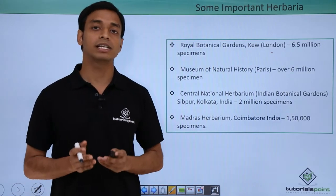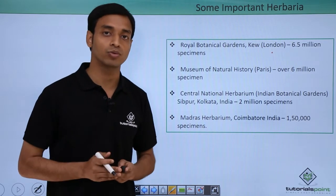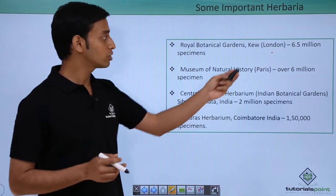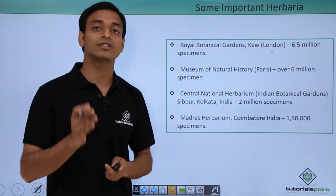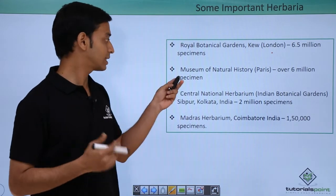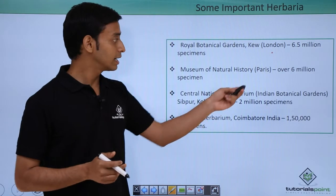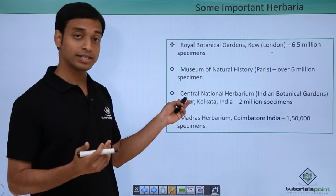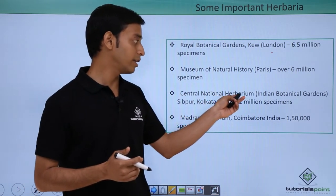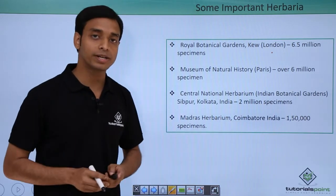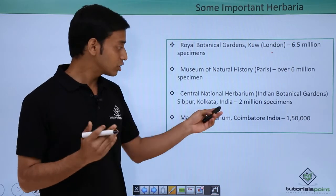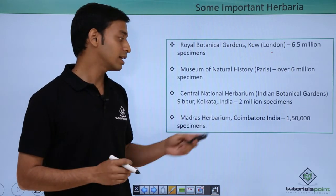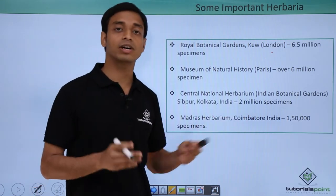Now let us look at some important herbaria set up throughout the world. The Royal Botanical Garden in Kew, London has about 6.5 million specimens and is the largest herbarium in the world. The Museum of Natural History in Paris contains over 6 million specimens. In India, the largest herbarium is the Central National Herbarium at the Indian Botanical Garden in Shibpur, Kolkata, with about 2 million specimens. Another Indian herbarium is the Madras Herbarium in Coimbatore, with a collection of about 150,000 samples.